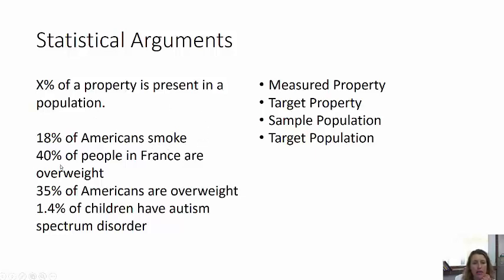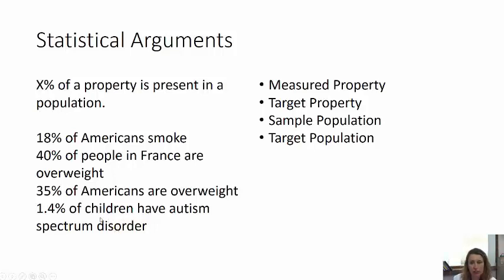40% of the property 'being overweight' is present in the population 'French people.' 35% of the property 'being overweight' in the population 'Americans.' 1.4% of the property 'autism spectrum disorder' in children — it doesn't specify children in the United States, it's just children everywhere. So we're going to talk about these things: measured property, target property, sample population, and target population.